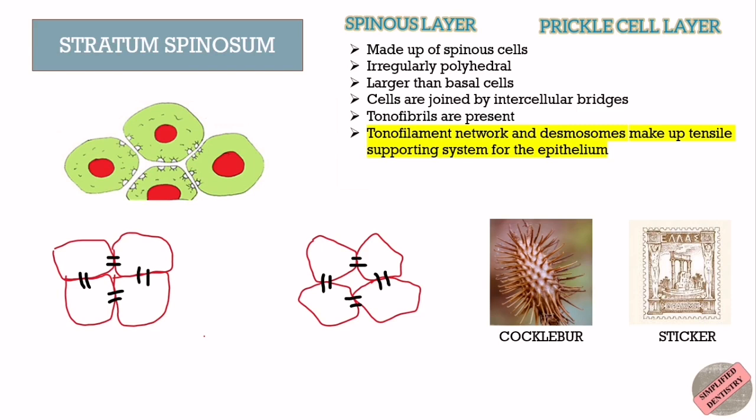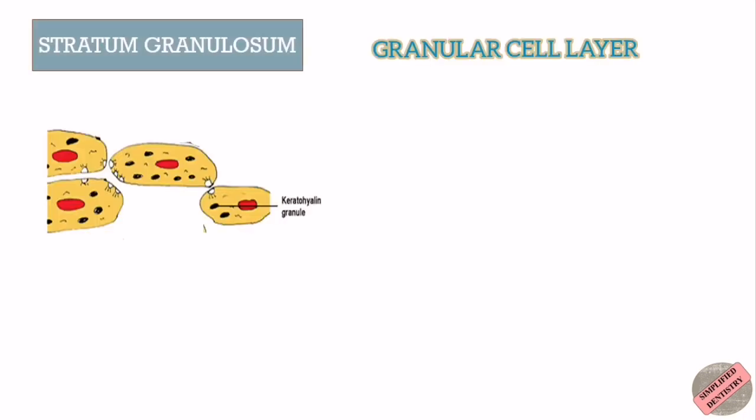Of all four layers, the spinous cells are most active in protein synthesis. These cells synthesize additional proteins that differ from those made in the basal cells, indicating their biochemical commitment — meaning that as a cell migrates from one layer to another, it undergoes biochemical changes.